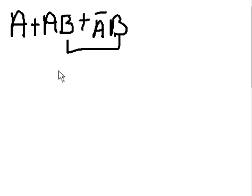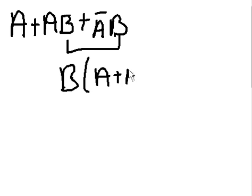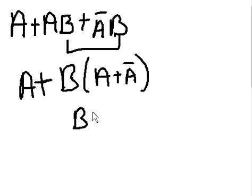...I can factor out B. So I'm going to say B times (A or Ā), and then bring this down, or Ā.